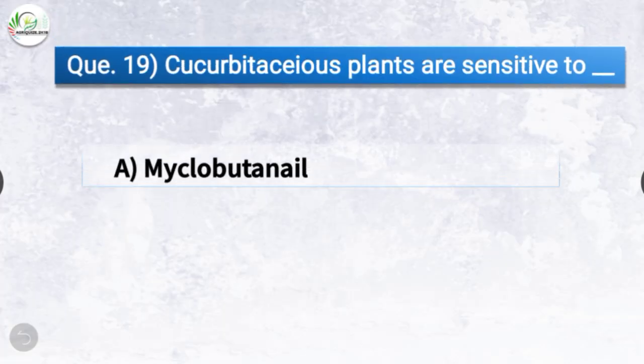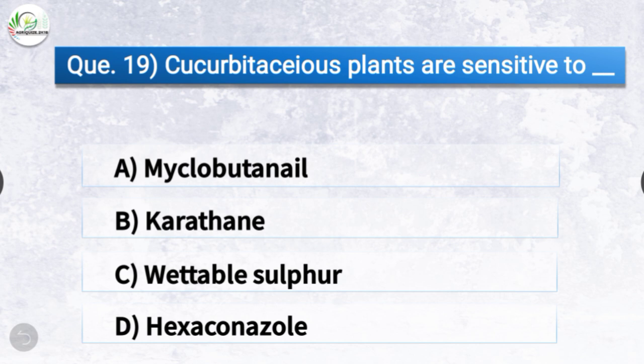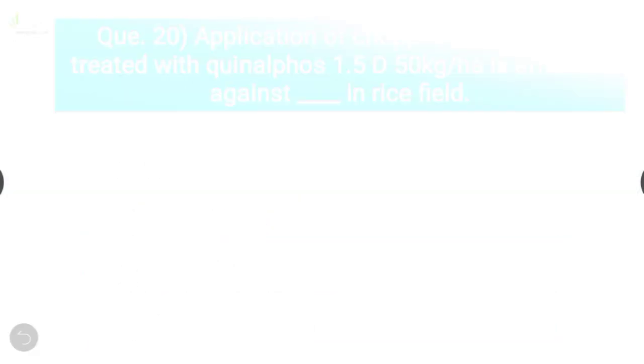Question number nineteen: Cucurbitaceous plants are sensitive to dash. The options are myclobutanil, carathane, wettable sulfur, or hexaconazole. The correct answer is option C, wettable sulfur — cucurbitaceous plants are sensitive to wettable sulfur. Question number twenty: Application of chopped paddy straw treated with quinalphos 1.5D at 50 kg per hectare is effective against dash in rice field.